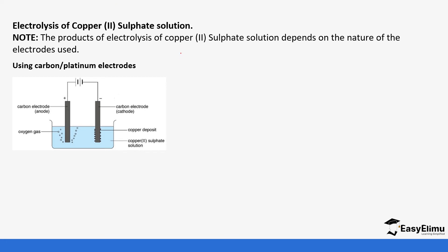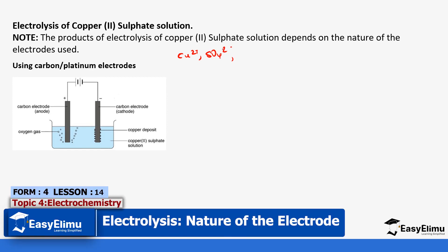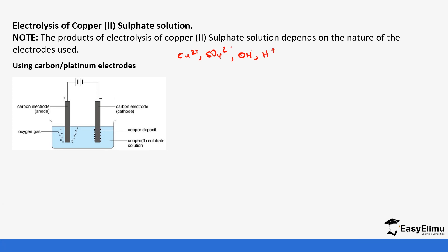The ions present in this solution are copper ions and sulfate ions, which come from the copper sulfate solution, and then OH⁻ ions and hydrogen ions which come from the water. At the anode, the anions travel to the anode — so the anions in this case are the sulfate ions and the OH⁻ ions. At the cathode, the copper cations and hydrogen ions also go to the cathode.